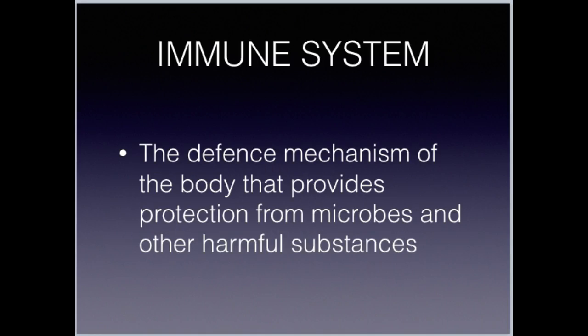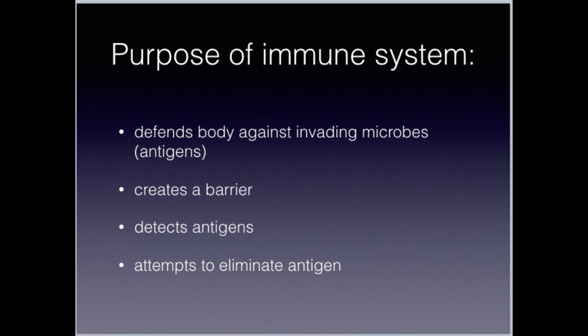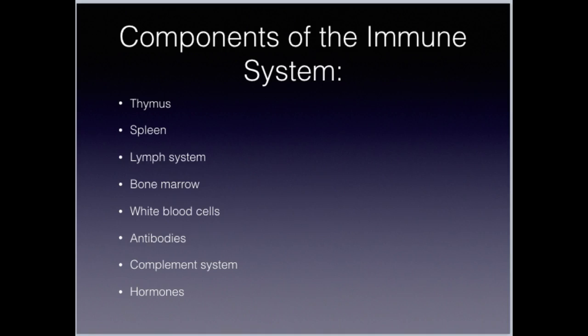Our immune system — we've talked about it in Essential Body and its purpose, so it's pretty self-explanatory. We'll look at all of the components of the immune system and where they're found in the body. We're going to spend a little bit of time on the hormones, complement system, antibodies, and white blood cells, because those are the ones that actually create inflammation.